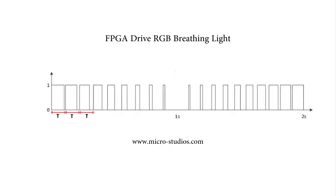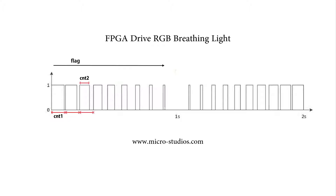So we need one count value to generate the period. And also we need another value to control the width of the high level. And also we need one value to control the direction — to change direction.